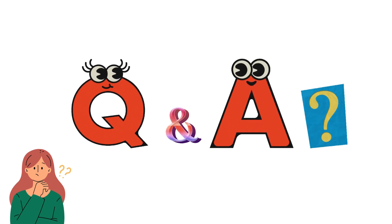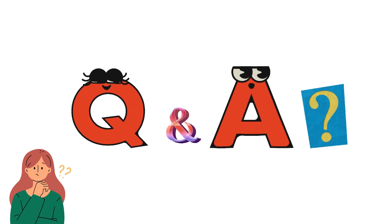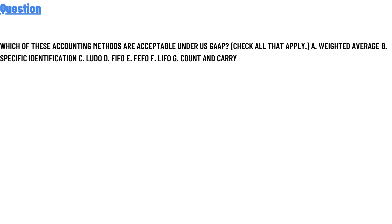Today's question is: which of these accounting methods are acceptable under US GAAP? Check all that apply. Option A: weighted average. Option B: specific identification. Option C: LUTO. Option D: FIFO. Option E: FEFO. Option F: LIFO. Option G: counts and carry.